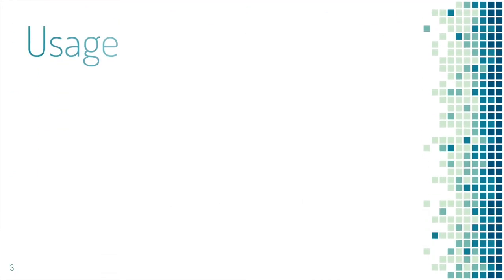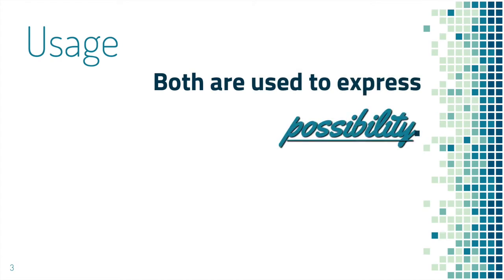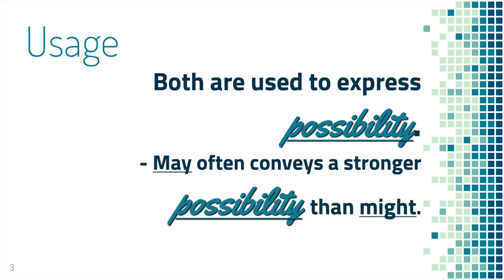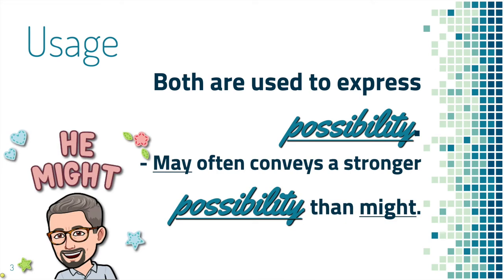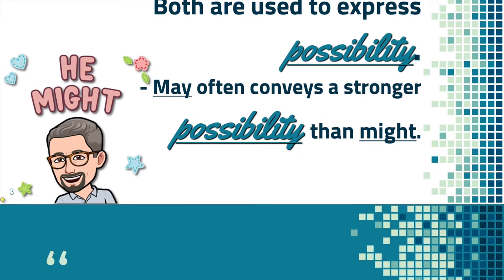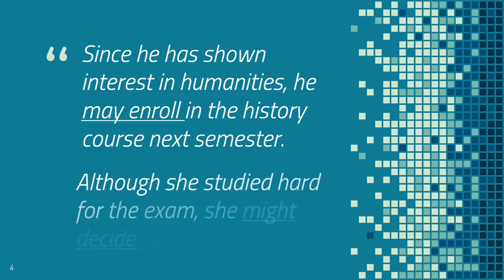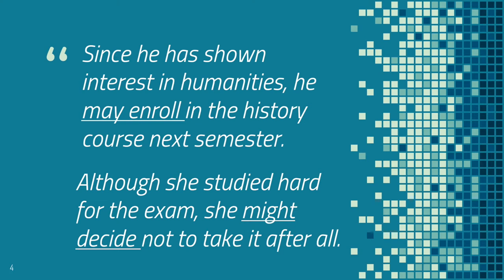Now let's take a look at usage. Both are used to express possibility. May often conveys a stronger possibility than might. Let's take a look at some examples. Since he has shown interest in humanities, he may enroll in the history course next semester. Although she studied hard for the exam, she might decide not to take it after all. Notice that I can even say she may decide not to take it after all — it's just a choice.